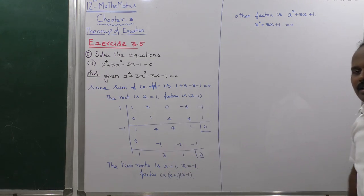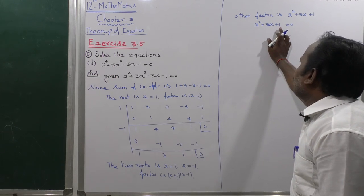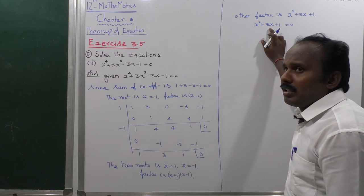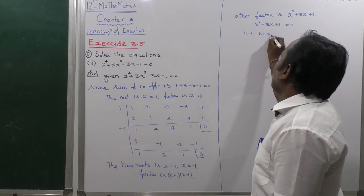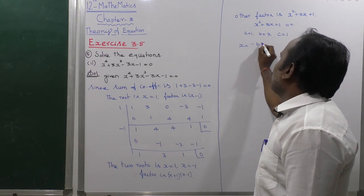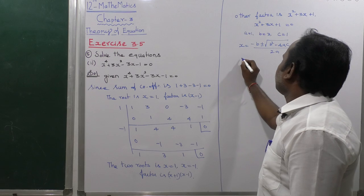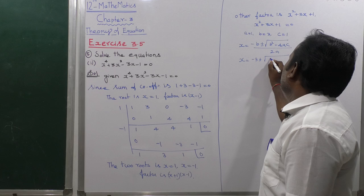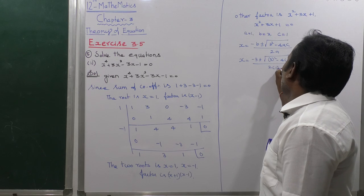The normal factoring method does not work here because no integers satisfy multiplication = 1 and addition = 3. So we use the quadratic formula with a = 1, b = 3, c = 1: x = (-b ± √(b² - 4ac)) / 2a = (-3 ± √(9 - 4)) / 2 = (-3 ± √5) / 2.